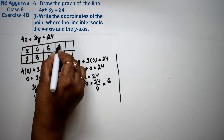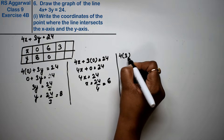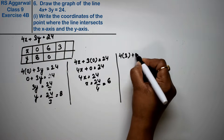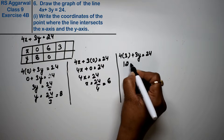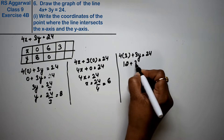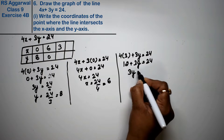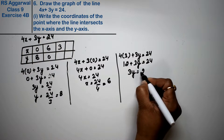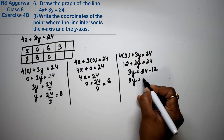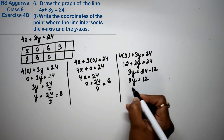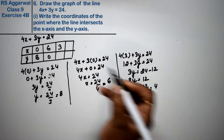If we keep x's value as 3, then: 4 into 3 plus 3y equals 24. So 12 plus 3y equals 24. Therefore 3y equals 24 minus 12, which gives 3y equals 12. So y equals 12 divided by 3, that is 4.